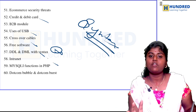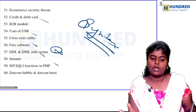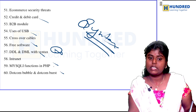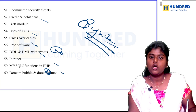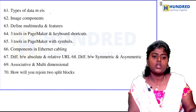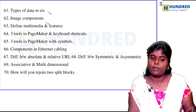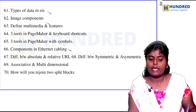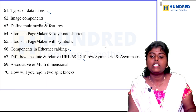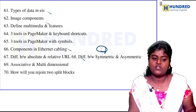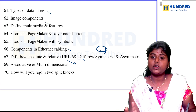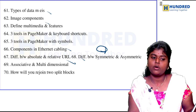MySQL is very important. Dot-com bubble and dot-com burst — this is a very important question. Some compulsory questions: data, image components, and components of Ethernet — cables, MDB or bits. Difference between symmetric and asymmetric — that is the key difference. Association method and multiple — this is a very important question.